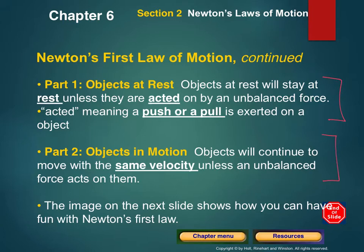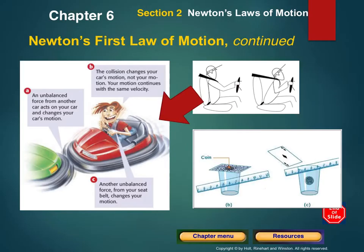The second part of Newton's first law is about objects in motion. Get in the habit of thinking about Newton's first law in these two parts — how objects behave when they're at rest and when they're in motion. When an object is in motion it will continue to move with the same velocity unless an unbalanced force acts on it. Think about when a person orbits the planet — you continue going around and around because there's no force other than gravity acting on you. Similarly, in a go-kart traveling at a constant speed, you keep going until an outside force — like another car — acts on you.